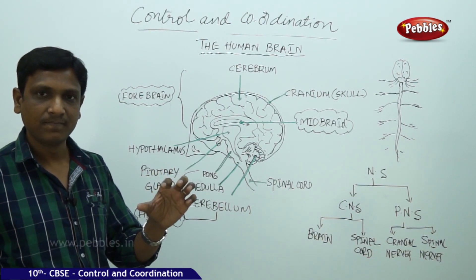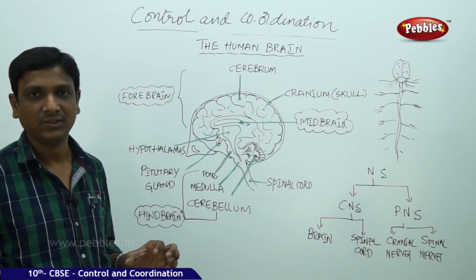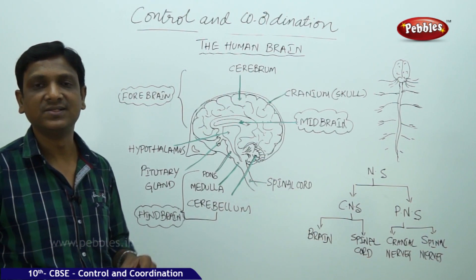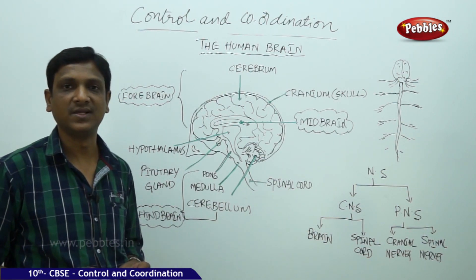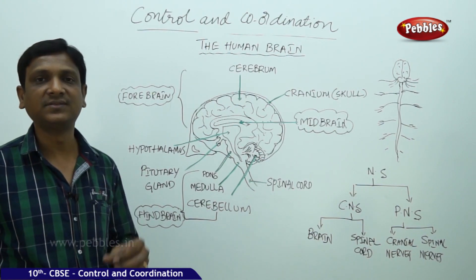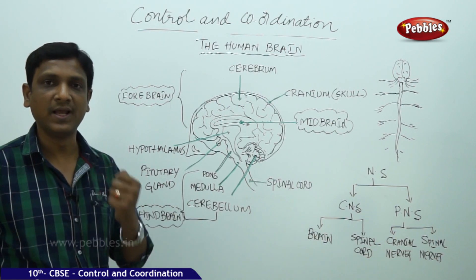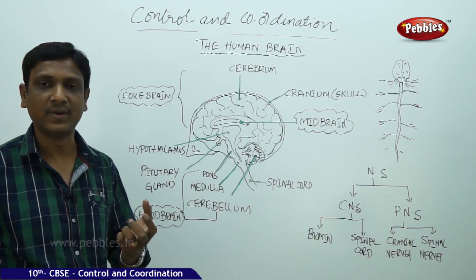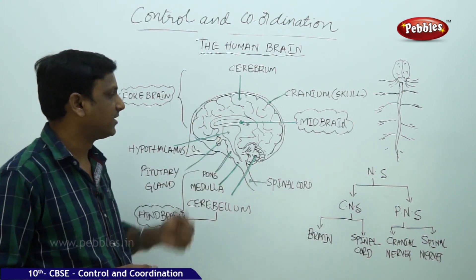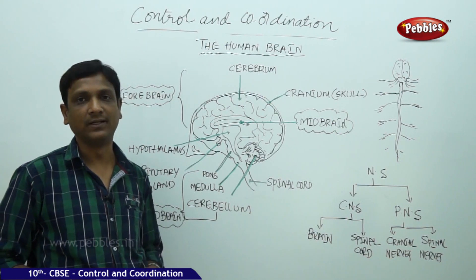The Central Nervous System is just like a CPU of a computer. When you use a desktop or a laptop, it has a Central Processing Unit. In the same way, in our body, the processing of various information and data — the stimuli, the changes in the environment — all of it is processed in our Central Nervous System, that is the brain and spinal cord.